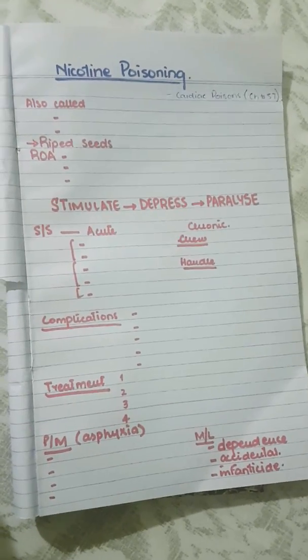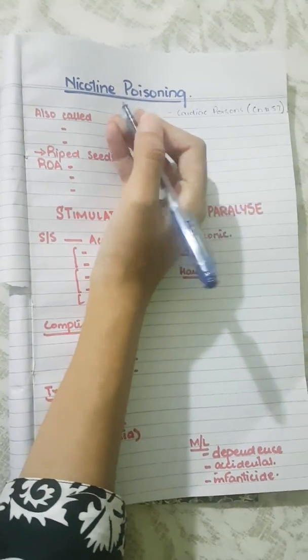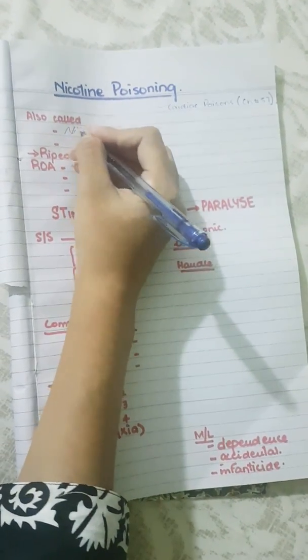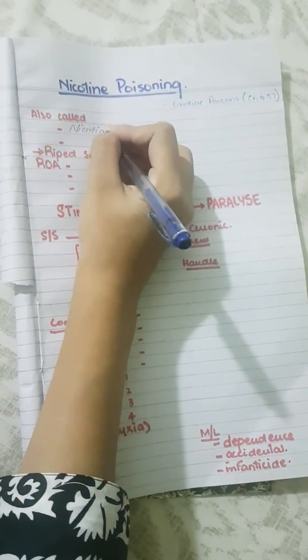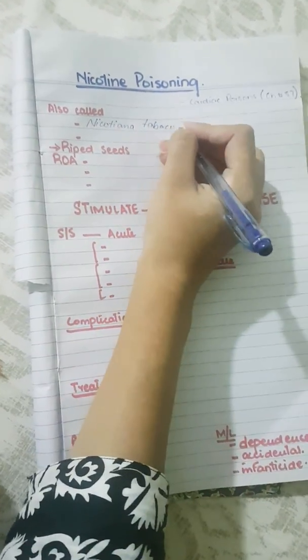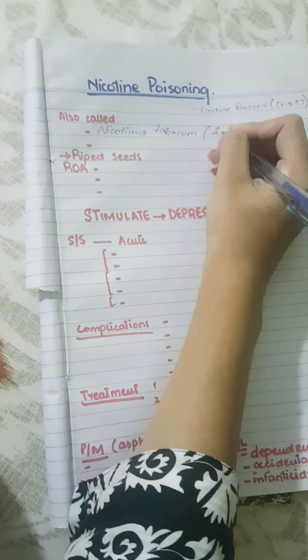Today's topic is nicotine poisoning. It is collected from a plant called nicotiana, tobacco, from its leaves.